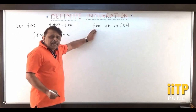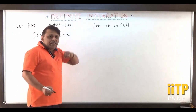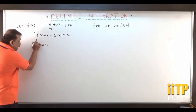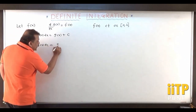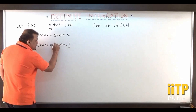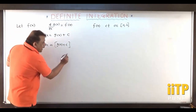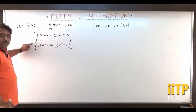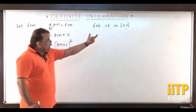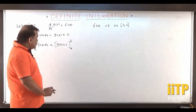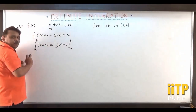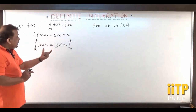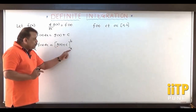Then the definite integral of f of x over the interval a to b is denoted by the integral of f of x dx from a to b, and is defined to be g of x plus c evaluated from a to b. Here a and b are the values of x, so the interval a to b is the domain of the function f of x, and x is moving from a to b. So we are integrating f of x over the interval a to b, defined as g of x plus c from a to b.